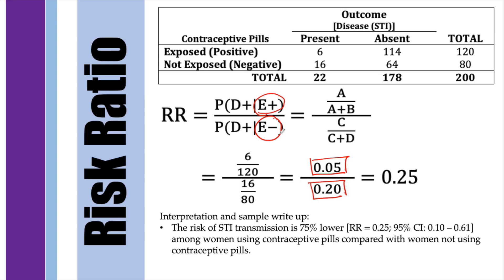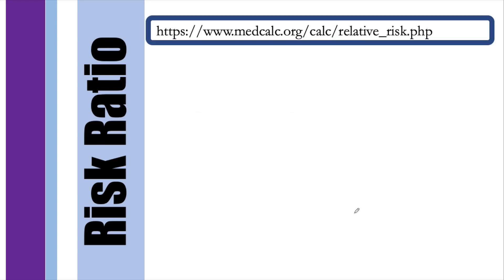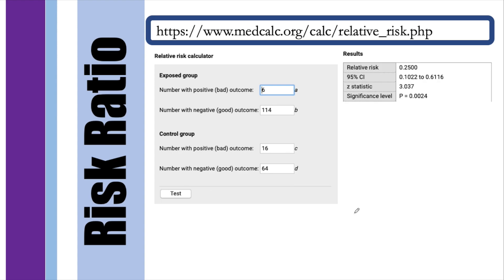The risk of STI transmission is 75% lower among women using contraceptive pills compared with women not using contraceptive pills. To get this percentage, subtract the relative risk by 1: 0.25 − 1 = −0.75, so 75% lower. If the result is positive, the risk is that percentage higher; if negative, it is that percentage lower. You can verify this result using the medcalc.org website.